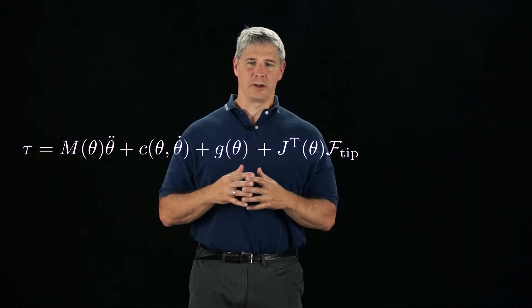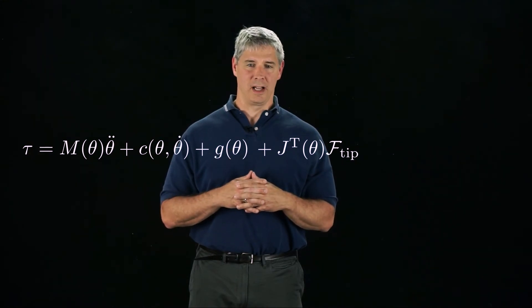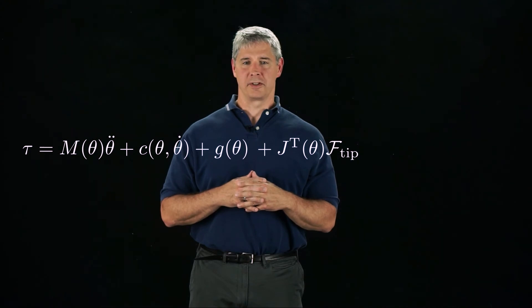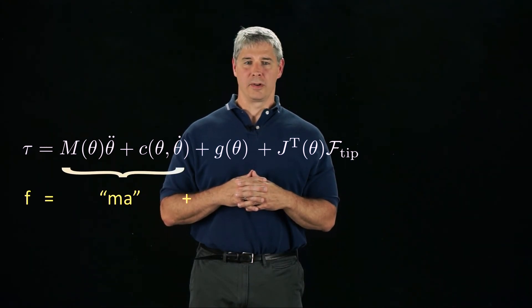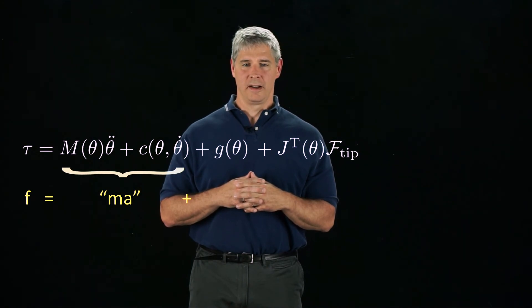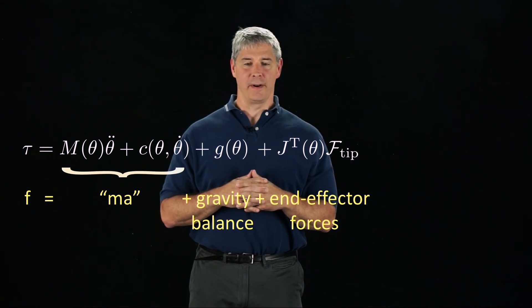You should now have a good understanding of the form of the dynamic equations of a robot, including the mass matrix and velocity product terms. Intuitively, these equations of motion are just F equals MA, where the MA term depends on both the joint velocities and accelerations, plus forces to balance gravity, plus forces to create the desired wrench at the end effector.